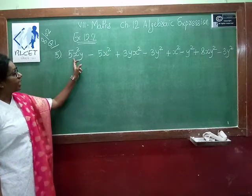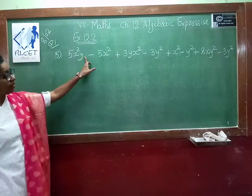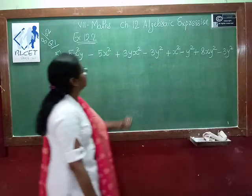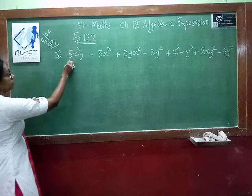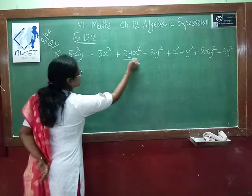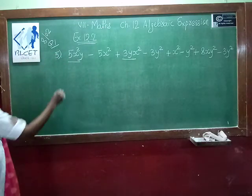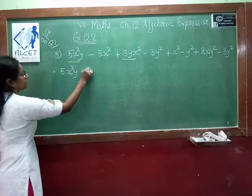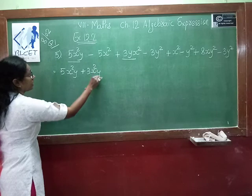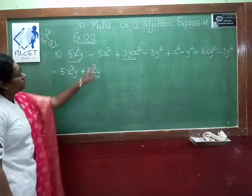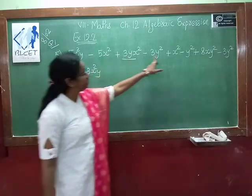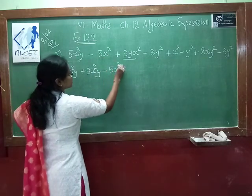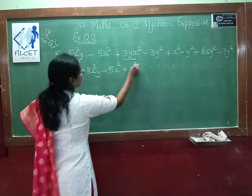Find the like terms. Start with 5x²y — we have to find the x²y terms. This one and this one are both like terms, so we write them together: 5x²y with 3x²y. Then minus 5x² plus x² — these are like terms.